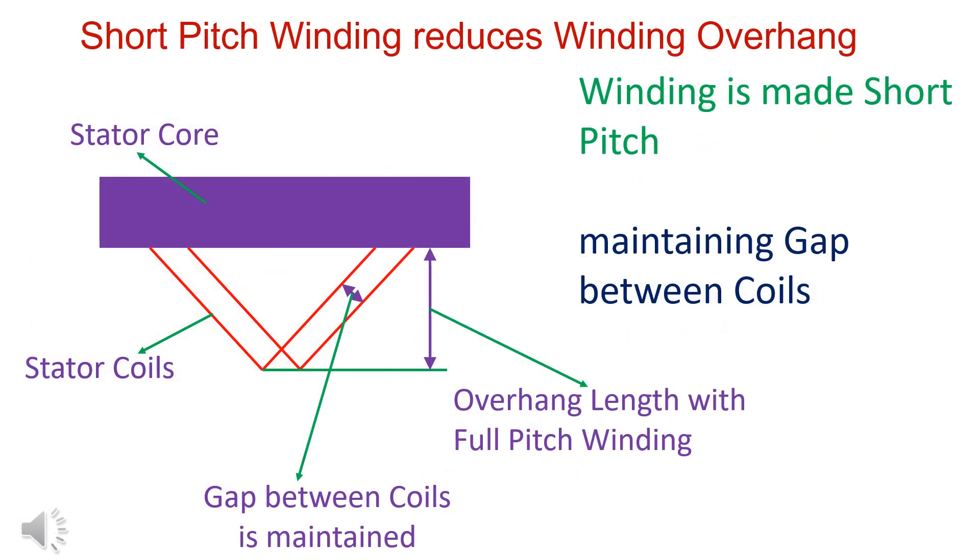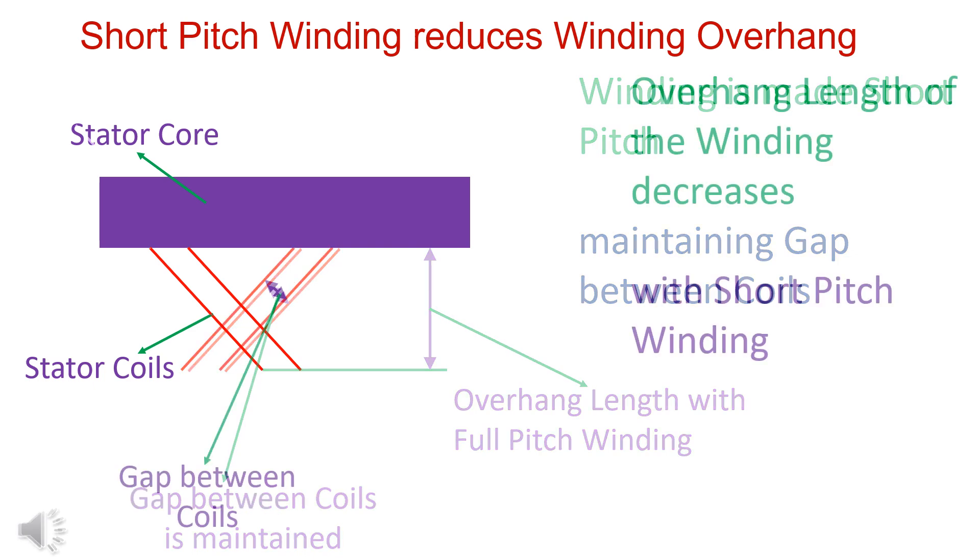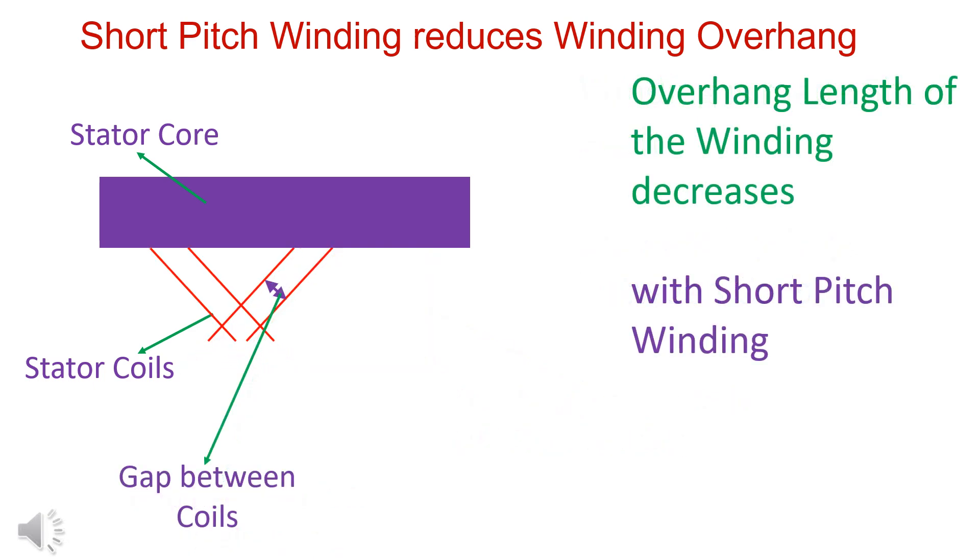The short pitch winding increases or decreases overhang length of winding. Winding is made short pitch, maintaining gap between the coils. The overhang length of stator winding decreases with short pitch winding.